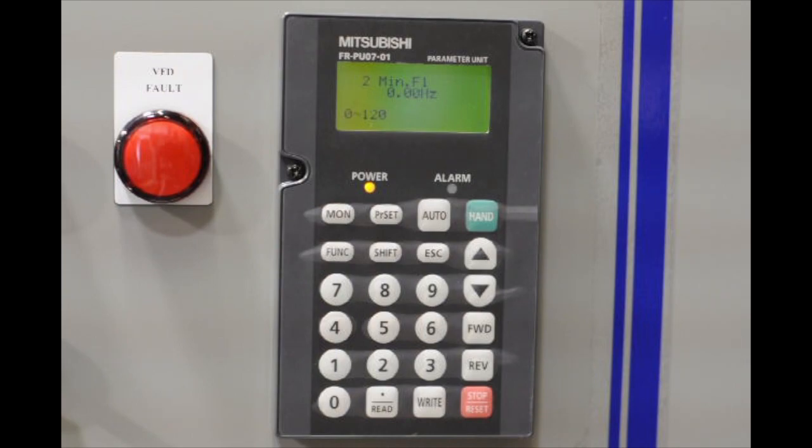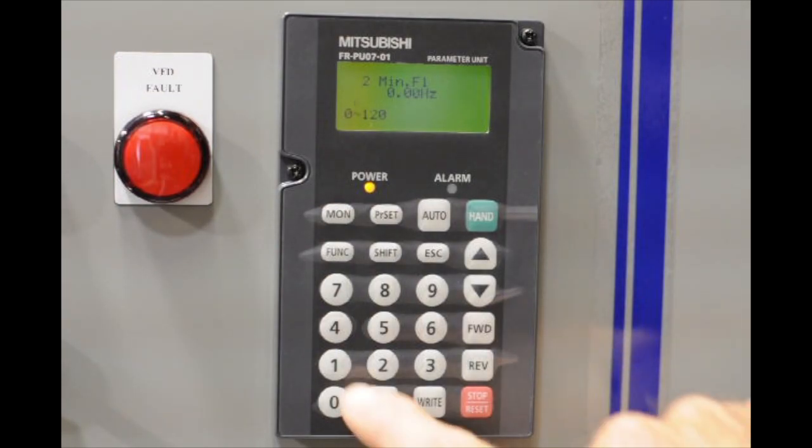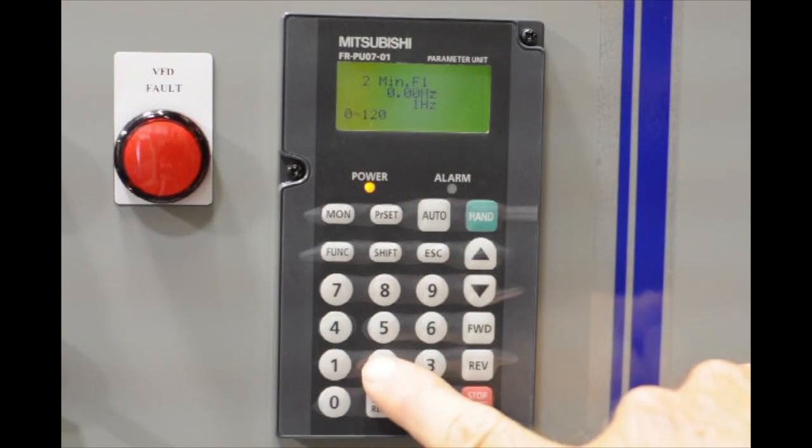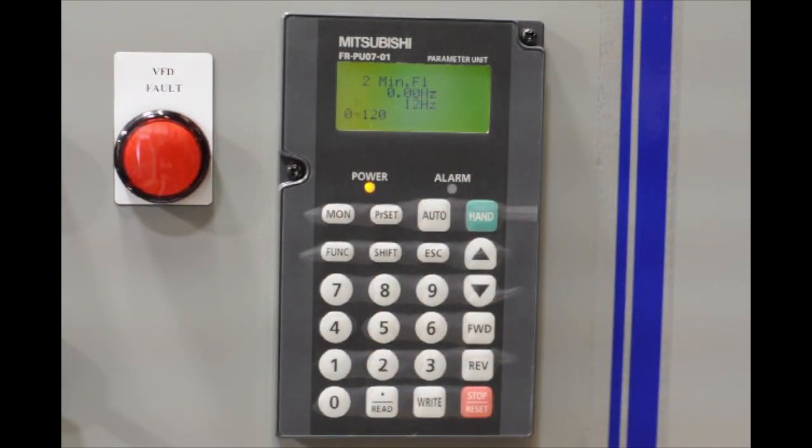Parameter two is the minimum frequency, and in most cases, we usually put a value of 12 as a minimum hertz. So in this case, we'll do that. We're going to type in 12, and we're going to hit write. The VFD acknowledged that by a beep, and the backlit is blinking.